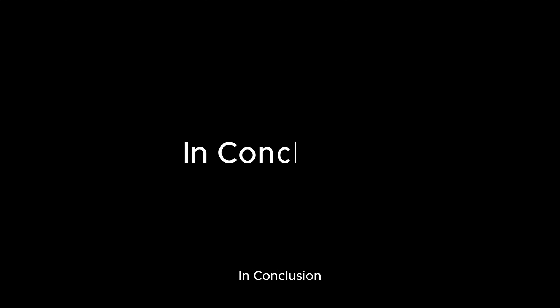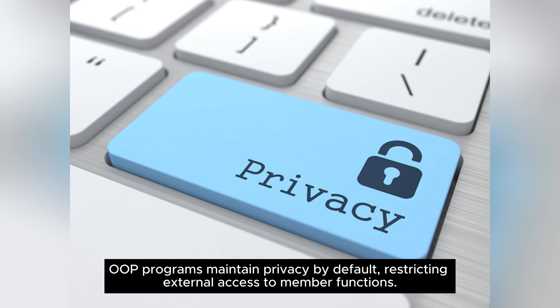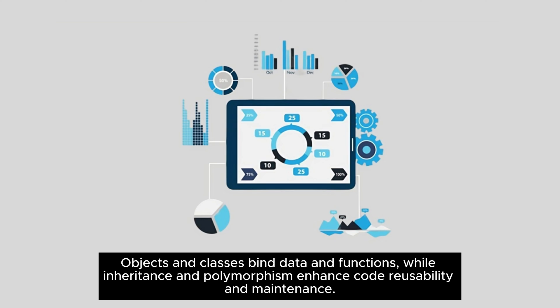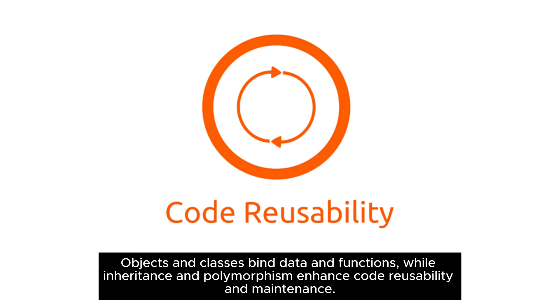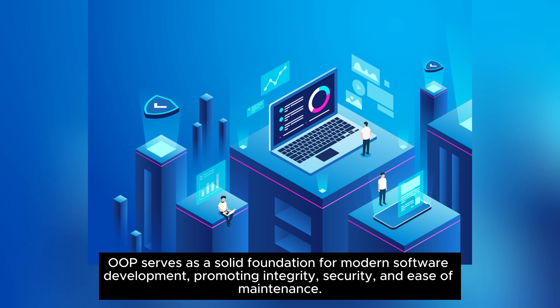In conclusion, OOP programs maintain privacy by default, restricting external access to member functions. Objects and classes bind data and functions, while inheritance and polymorphism enhance code reusability and maintenance. OOP serves as a solid foundation for modern software development, promoting integrity, security, and ease of maintenance.